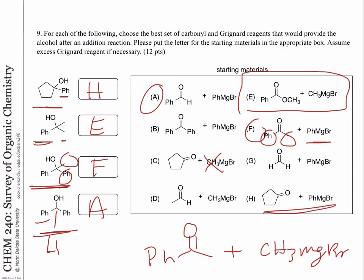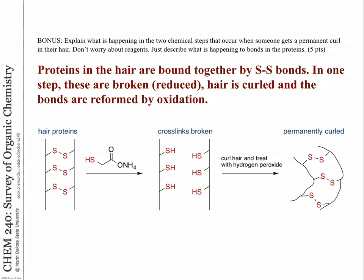And the last one was just the bonus problem — just to remind you, what I was looking for is just to say something about sulfur bonds having to be broken and then reformed. An S-S bond is reduced and an S-H bond is reformed to do the hair curling. So that's the test. If you have any questions or problems with the grading, or it's been added wrong or anything, please come see me after class and we can take a look at that.